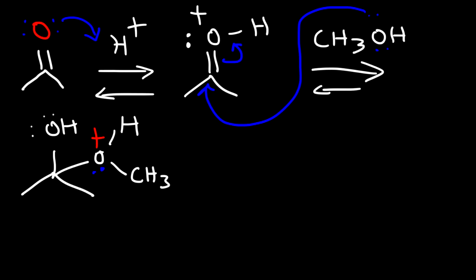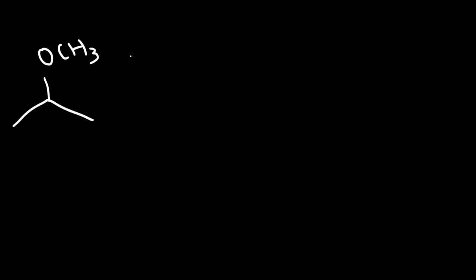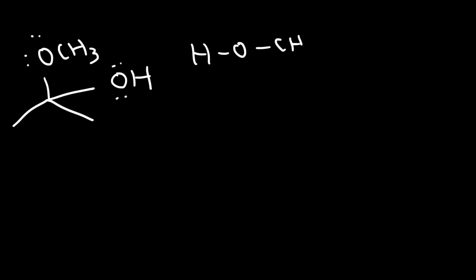So what we need to do is get rid of the hydrogen. We'll use another methanol molecule to act as a weak base, and it's going to take away this hydrogen for us. Now we have an OR group and an OH group. The methanol that took the hydrogen away is now protonated, so we're going to take a hydrogen from that protonated alcohol and transfer it to the OH group.